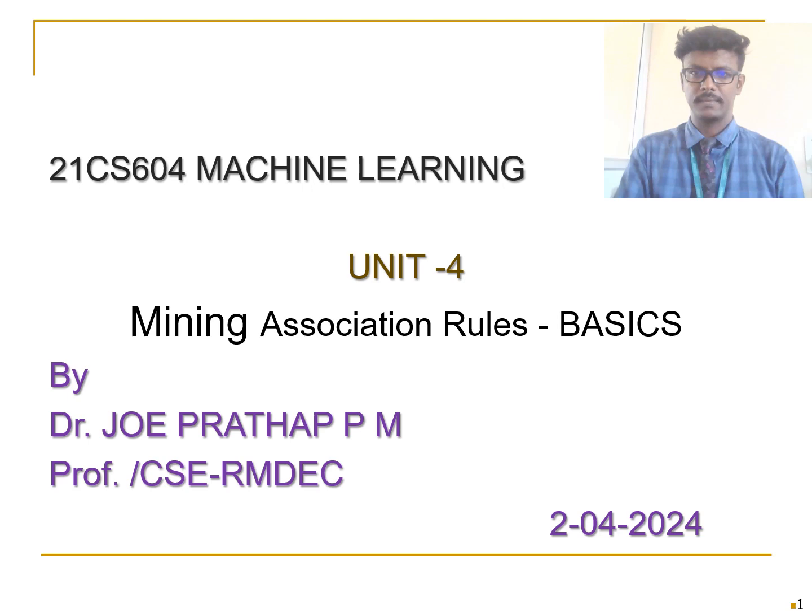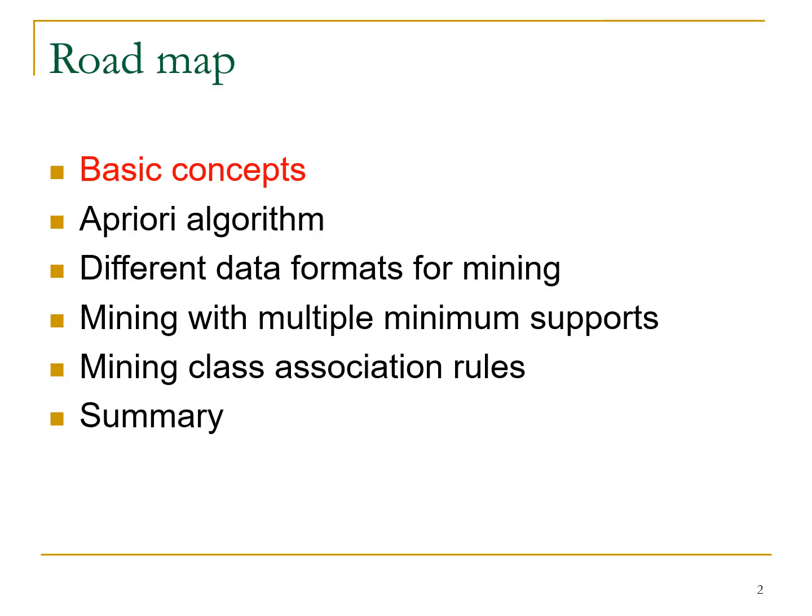Association rule mining finds interesting associations and relationships among a larger set of data items, because one attribute may relate to another — directly or indirectly. We need to find these associations and relationships, and when we find them automatically for clustering or classification it is very helpful. This rule shows how frequently an item set occurs in a transaction. A good example is market basket analysis.